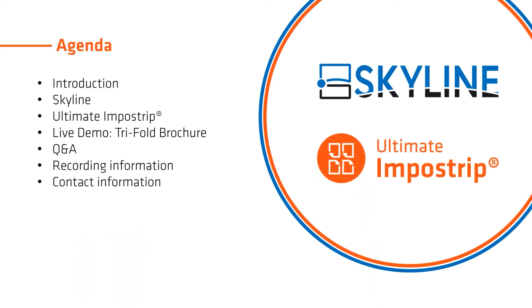Thank you so much, Eve, and once again everyone, thank you for joining today's webinar session wherever you're connecting from around the world. We have a large crowd today, so hopefully you'll find this very interesting. We'll start with an introduction of the Skyline technology, then look into Ultimate ImpoStrip — some of you may be familiar with it, some may not be familiar with the joint integration — and you'll see a live demonstration of how this integration and automation work to generate print-ready products seamlessly and get them produced automatically.